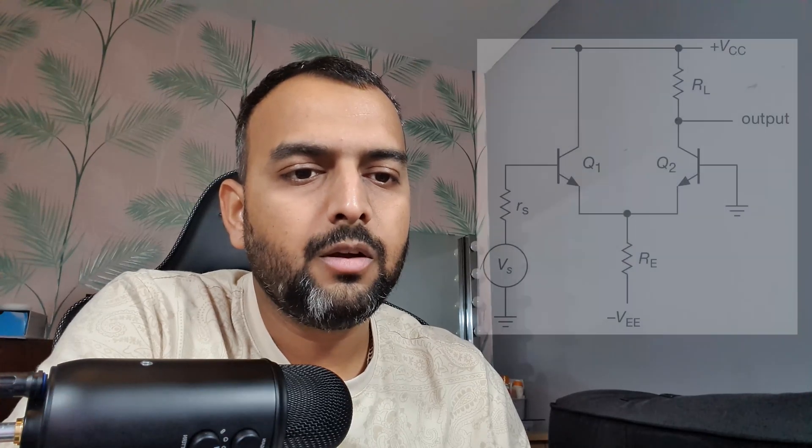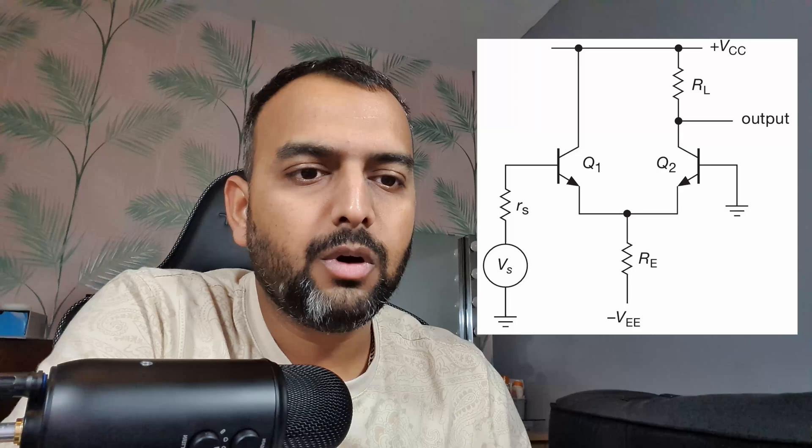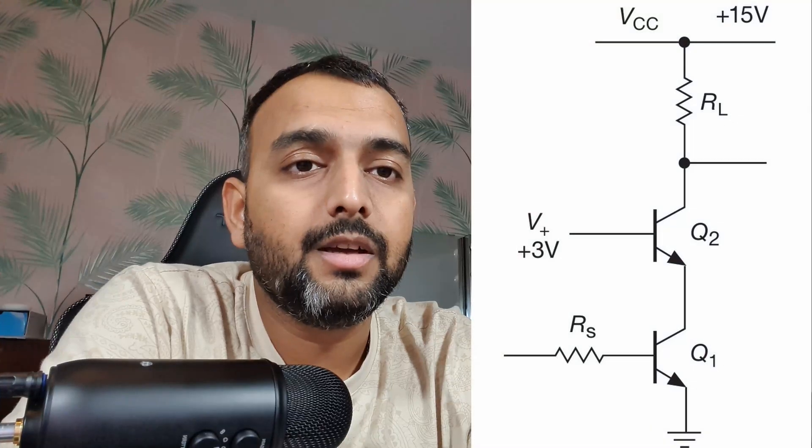The two circuits the question is talking about are the following: one is a differential amplifier where the base where you are taking the output is grounded and a single-ended output is taken. The second transistor circuit is an amplifier called a cascode amplifier, where we have an NPN transistor connected in series with another NPN transistor.